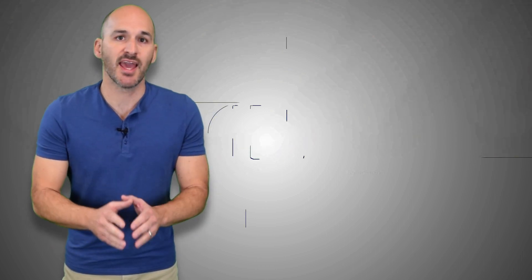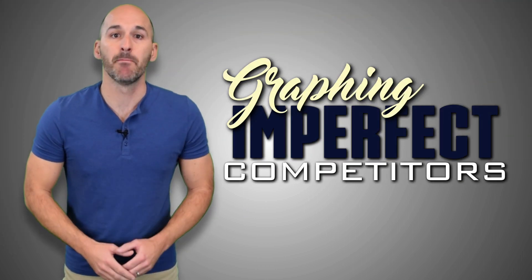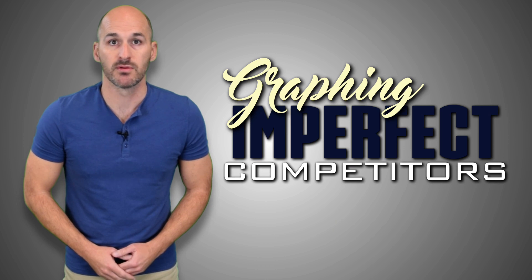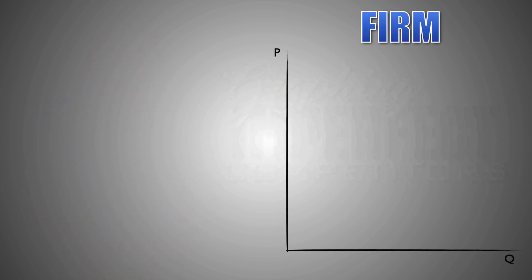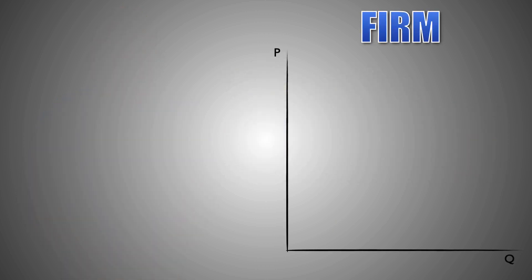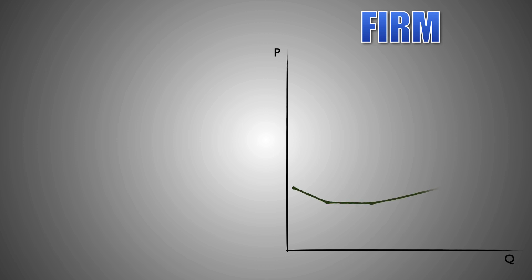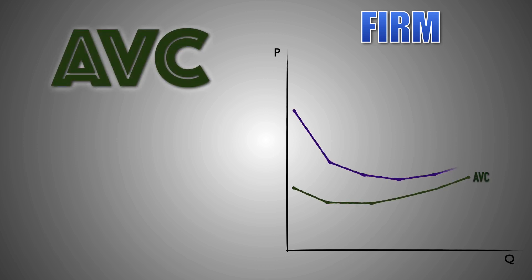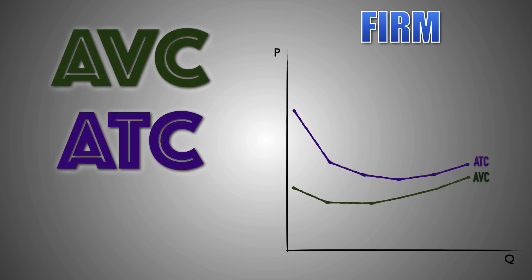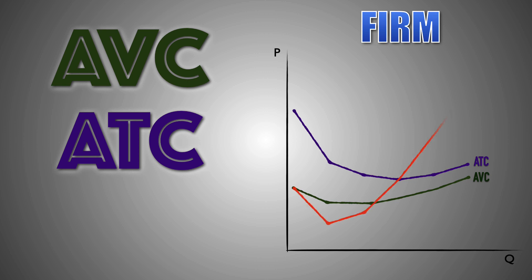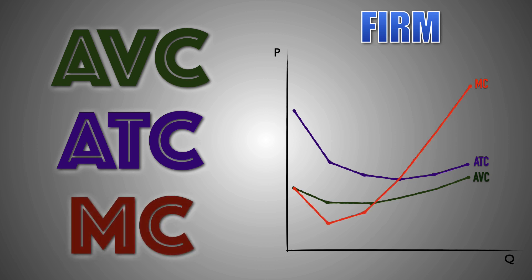Now that we've covered these facts, let's move on and take a look at graphing an imperfectly competitive firm. Let's begin by graphing the per-unit production cost curves for the firm. Here we can see the average variable cost, the average total cost, and the marginal cost for the firm at various levels of output.